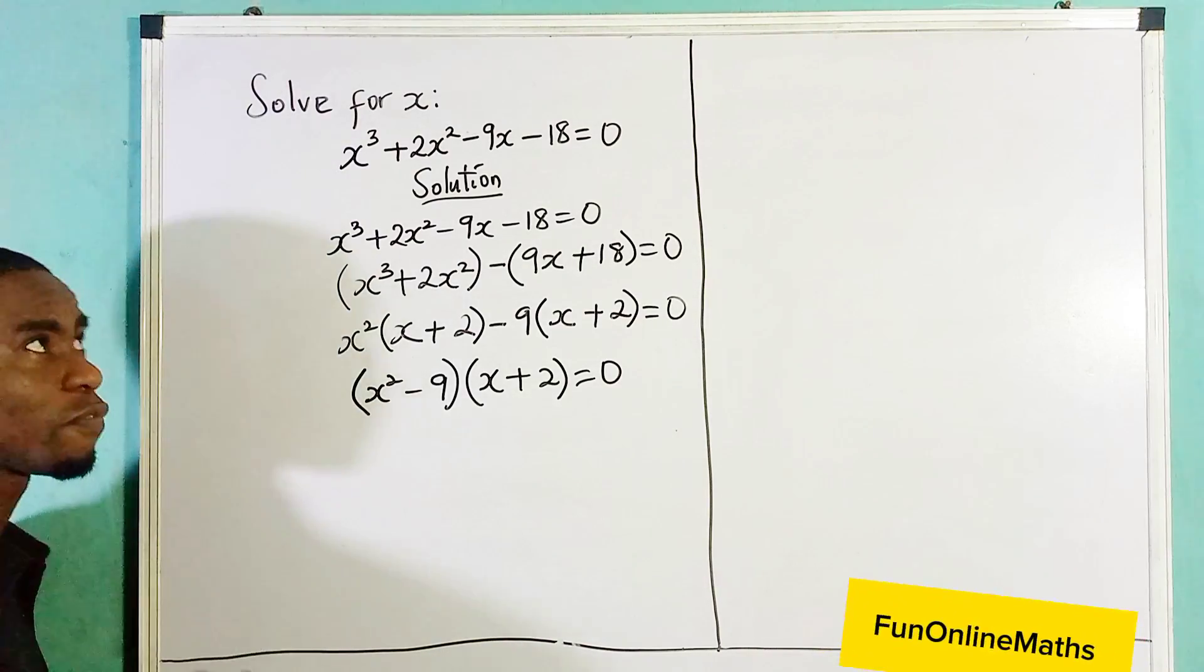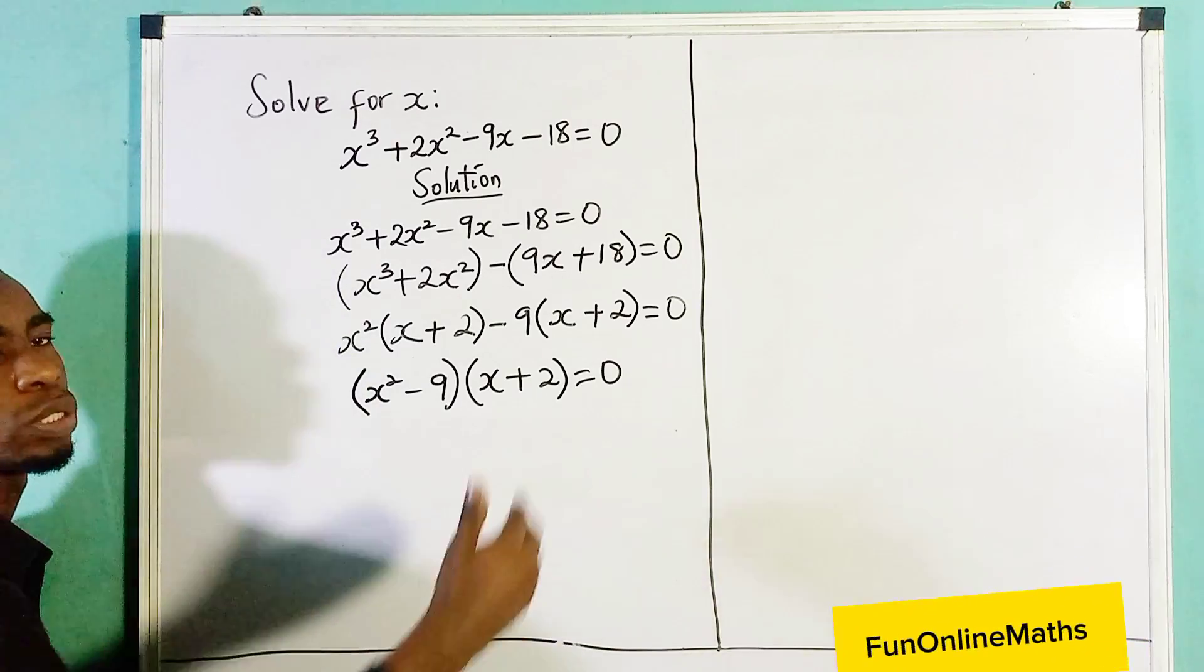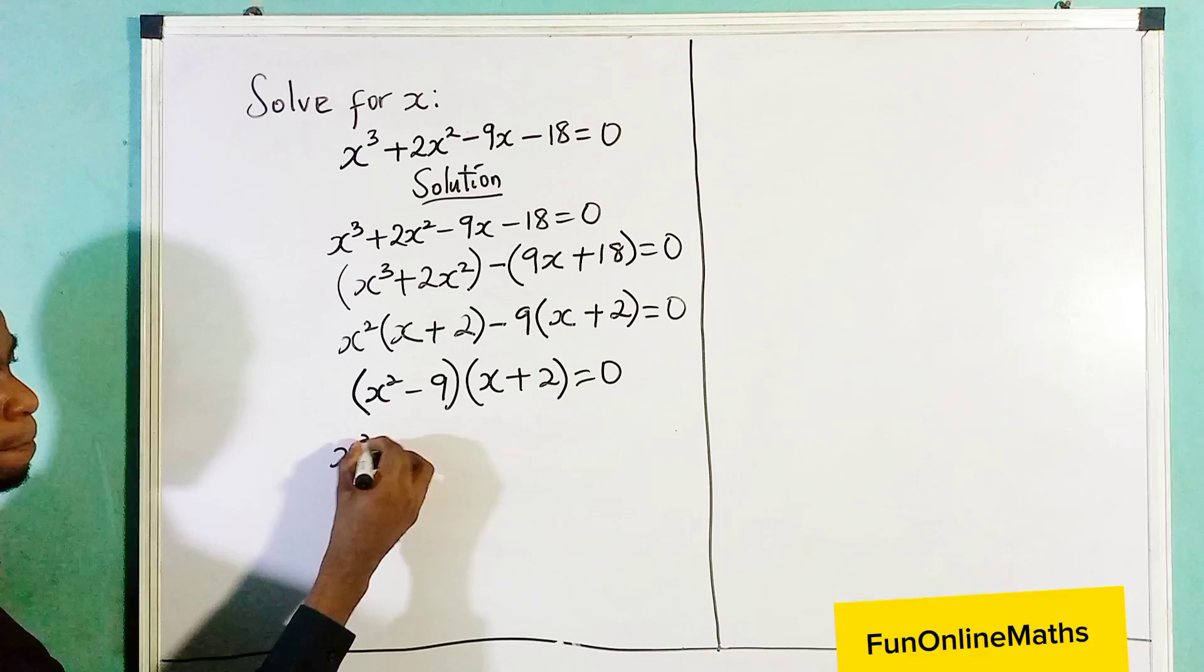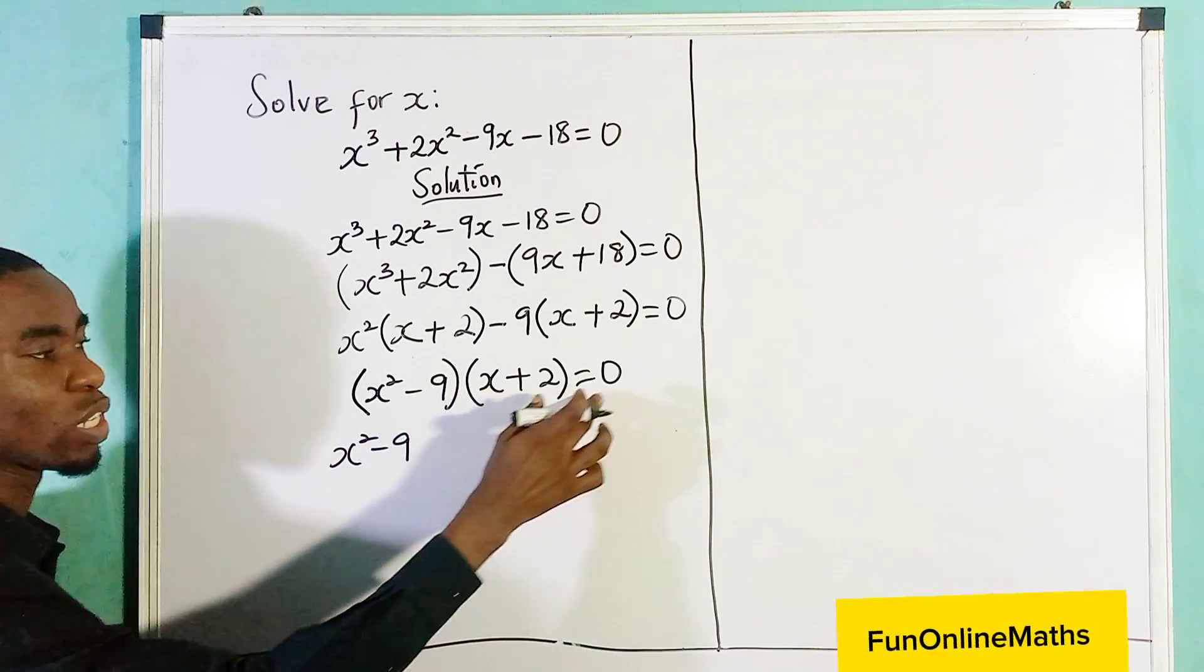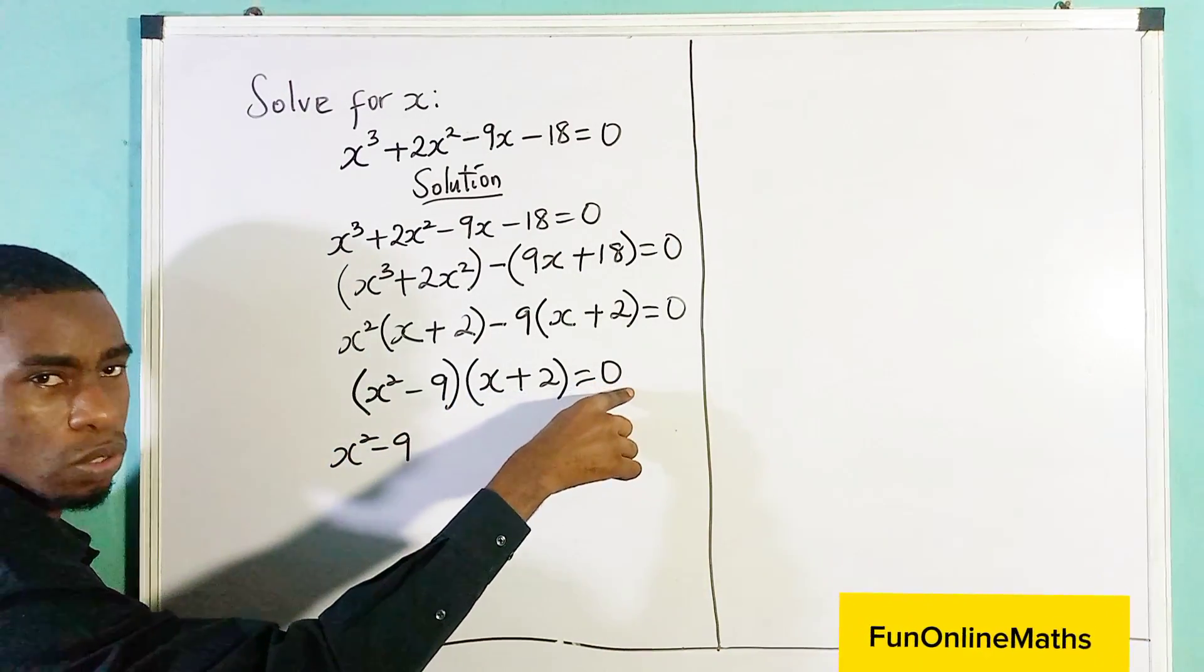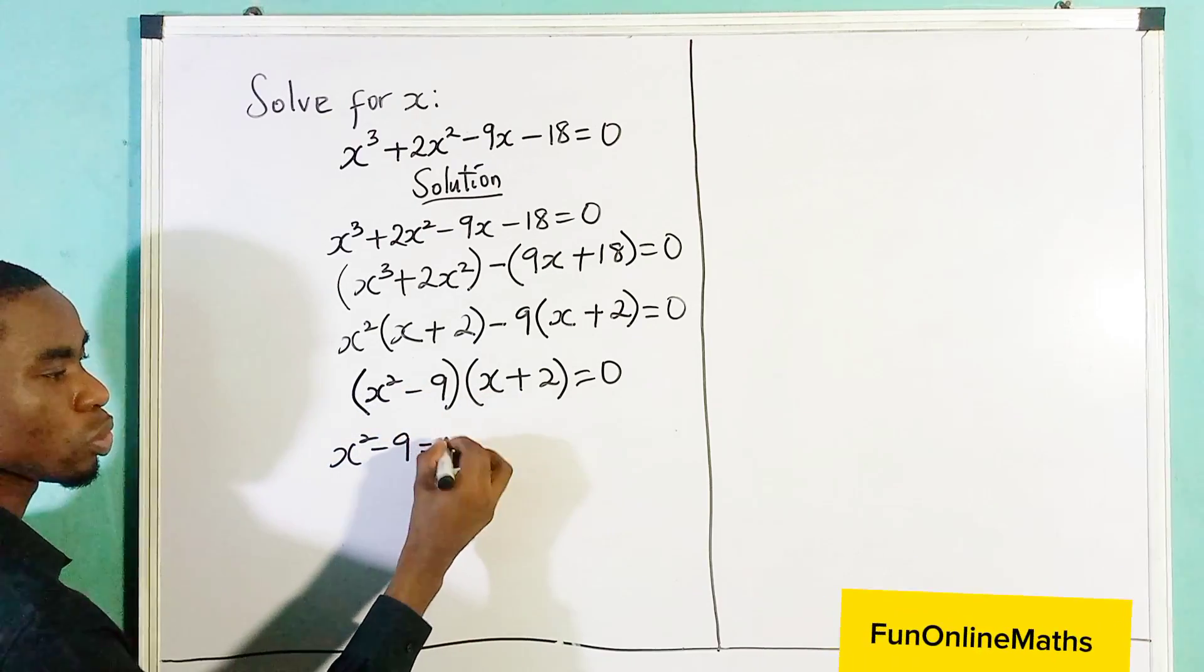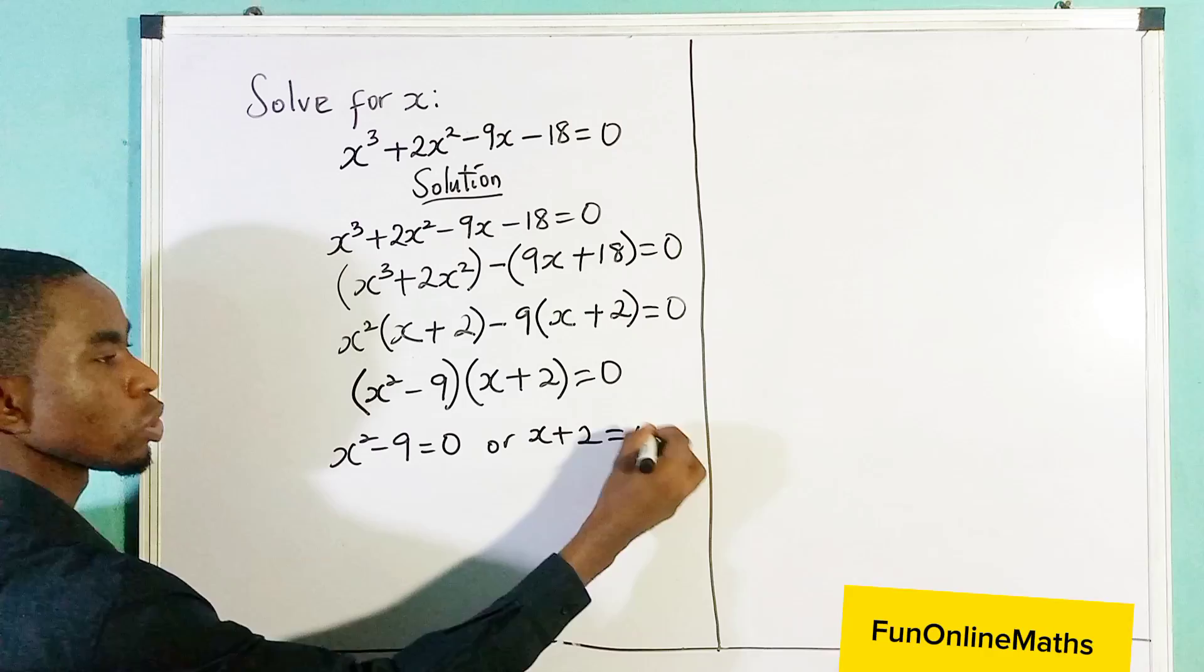We are looking for the solution. It says solve for x, so we should get the value of x. So for the first one we have x² - 9. Since both of them multiply each other to give zero, it means that either this is equal to zero or this is equal to zero. So we write x² - 9 equals to zero, or x + 2 equals to zero.